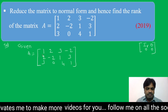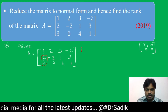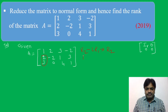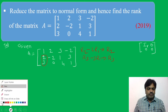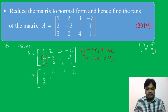First, I want to make these two elements 0 using row operations. We apply R2 minus 2R1 in place of R2, and R3 minus 3R1 in place of R3. So row 1 stays as 1, 2, 3, minus 2. For R2: minus 2 minus 4 is minus 6 for the second entry; 1 minus 6 is minus 5; 3 plus 4 is 7. For R3: 0, minus 6, minus 5, 7.